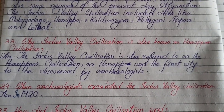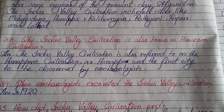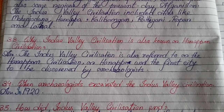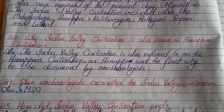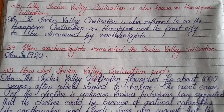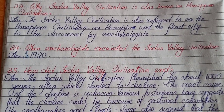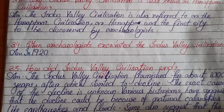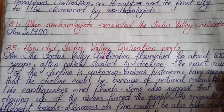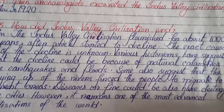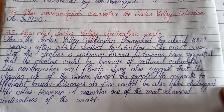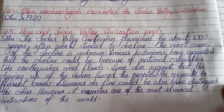Why is the Indus Valley Civilization also known as Harappan civilization? The Indus Valley Civilization is referred to as Harappan civilization because Harappa was the first city to be discovered by archaeologists when they excavated the Indus Valley in 1920. How did the Indus Valley Civilization end? This is the last question of the chapter.